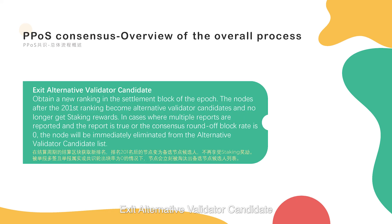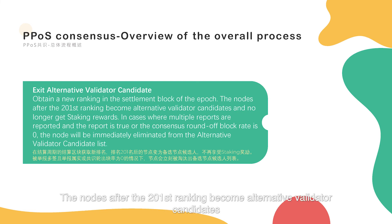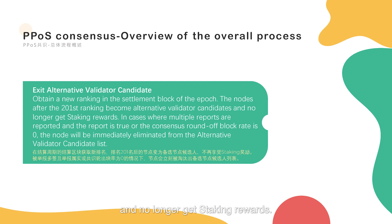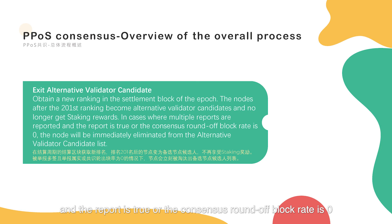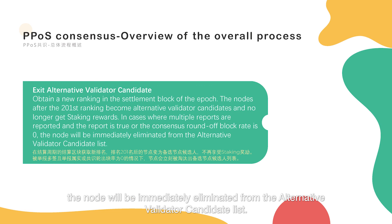Sixth, exit alternative validator candidate: nodes obtain a new ranking in the settlement block of the epoch. Nodes after the 201st ranking become alternative validator candidates and no longer get staking rewards. In cases where multiple reports are reported and the report is true, or the consensus round block rate is zero, the node will be immediately eliminated from the alternative validator candidate list.